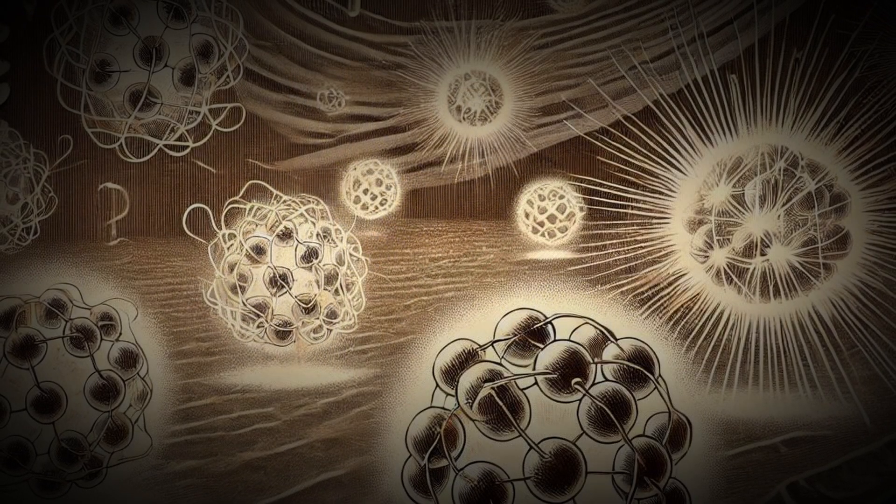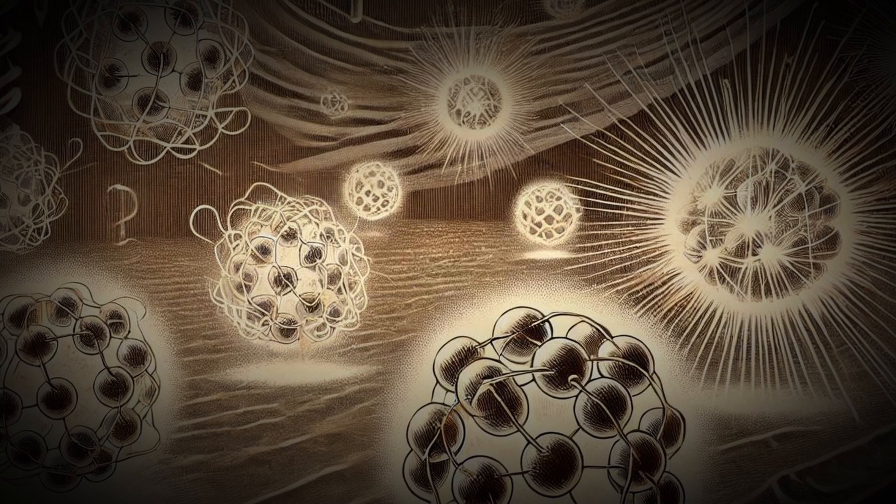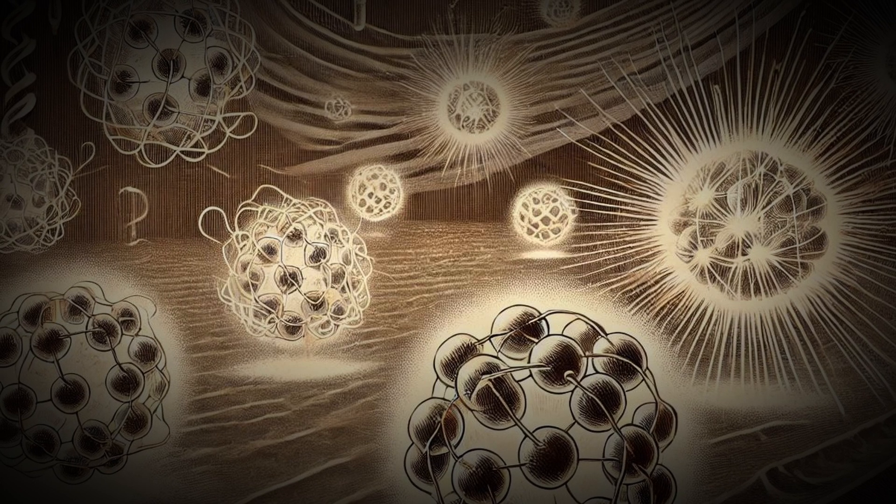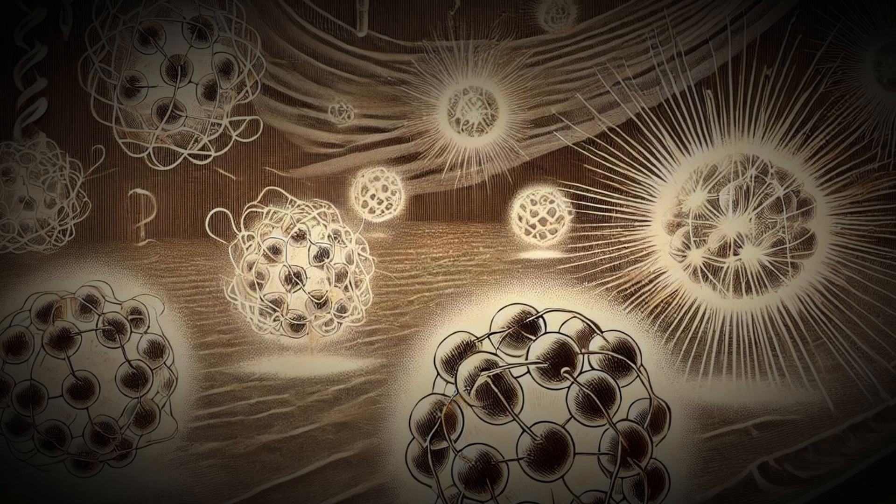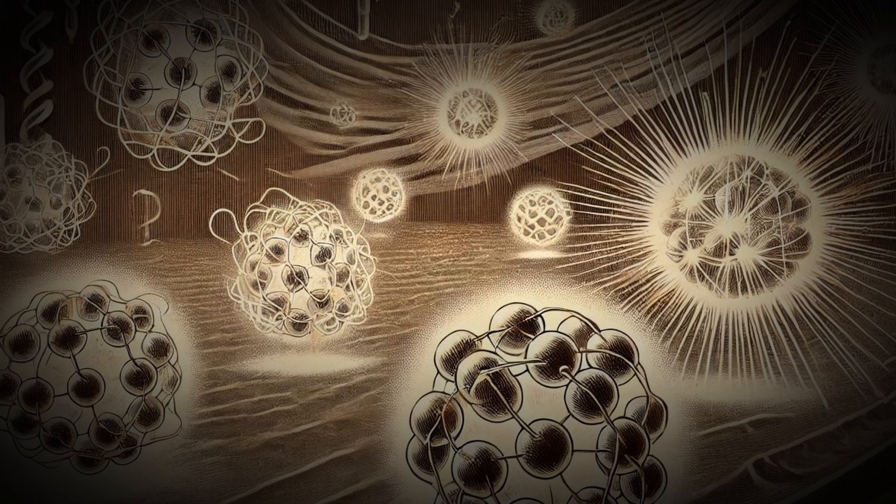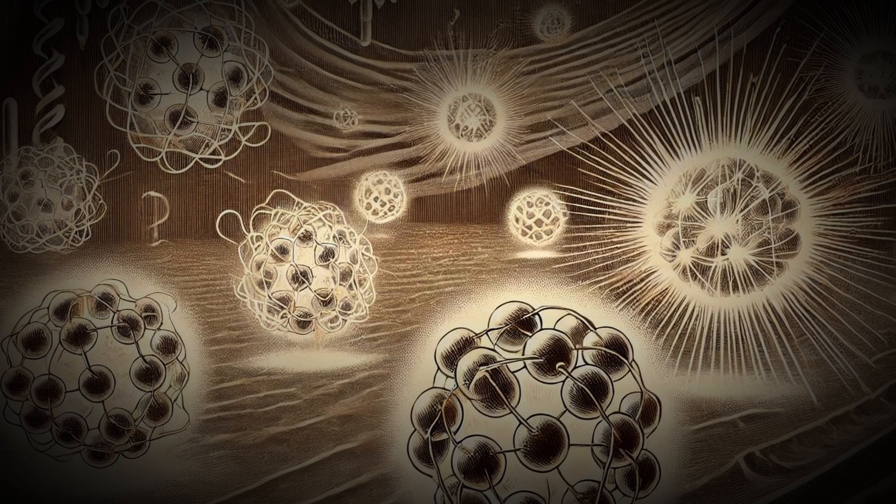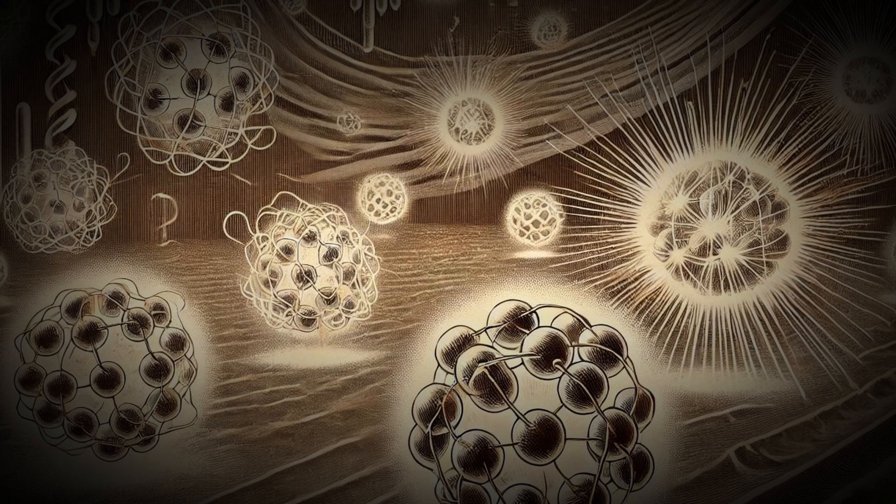Picture a simple experiment. We have a barrier with two narrow slits cut into it, and a screen behind to capture whatever comes through. First, imagine firing a beam of light at the slits. Instead of creating just two bright bands on the screen, the light spreads out and forms multiple bright and dark bands, an interference pattern, indicating wave-like behavior.